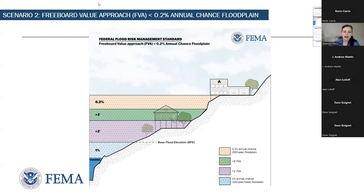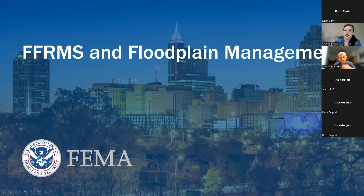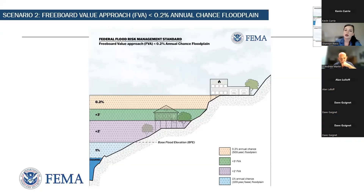By encouraging communities to guide development to low-risk areas and by requiring the elevation of new buildings and existing buildings that undergo significant improvement or have sustained substantial damage, the long-term objective of reducing flood damage and losses is being realized. At this point I'm going to turn it back over to Andrew Martin.